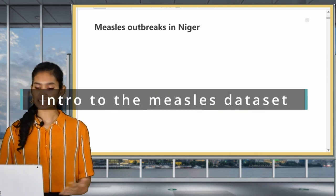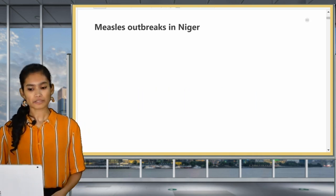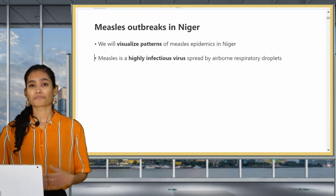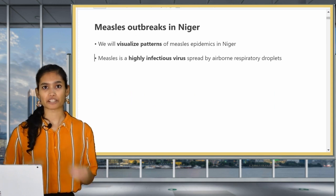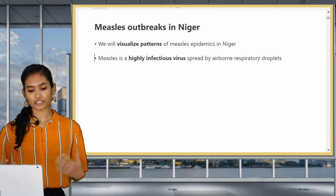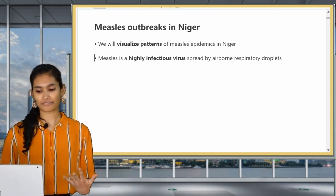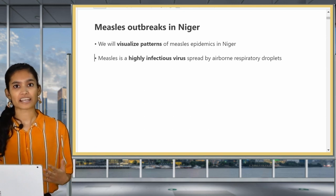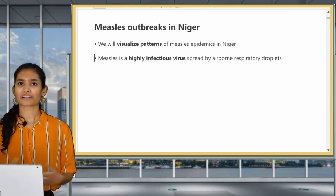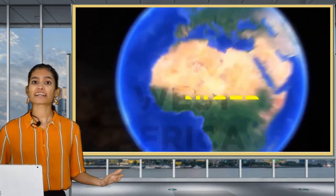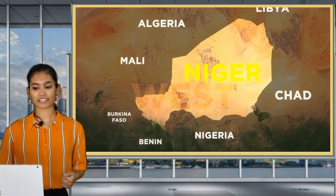So what are we going to visualize in this lesson? We're going to be looking at measles patterns in Niger. Measles is a highly contagious respiratory virus that's spread in close contact. It mostly affects children and can be deadly if not treated. First of all let's look at the geography and ecology of Niger to get a better understanding of how measles might be spread out.